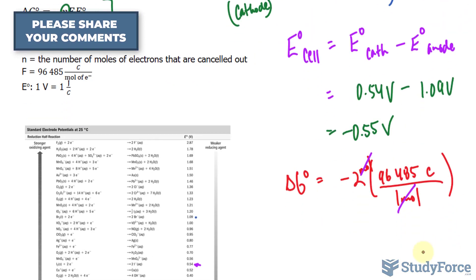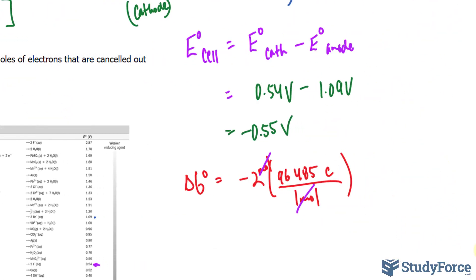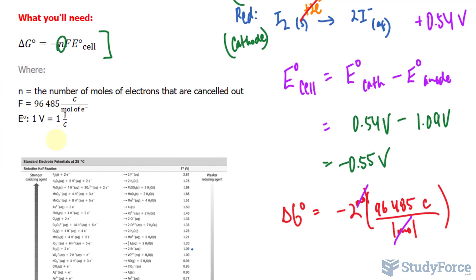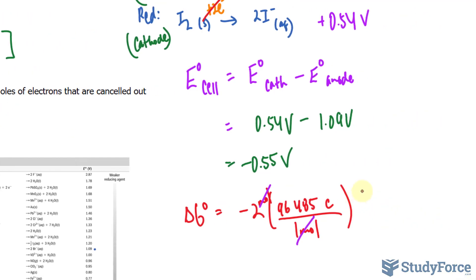This now gets multiplied to E cell. I've written down a relationship here that one volt is equal to one joule per coulomb. So I'm going to multiply this number now by -0.55 joule per coulomb. And this now cancels out, leaving us with joules. And that's how delta G is represented.